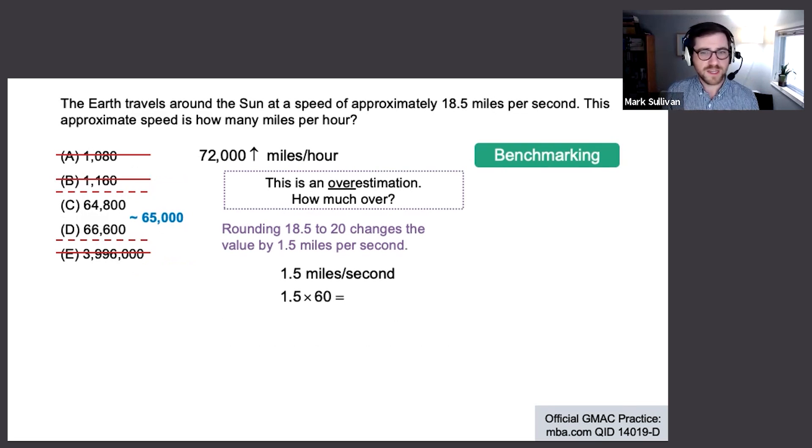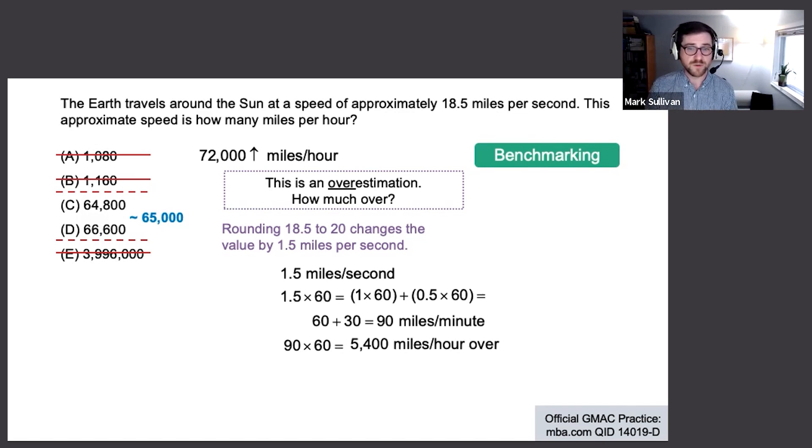1.5 miles per second - I could run through the same procedure here, turn that into miles a minute: 90 miles per minute. Again here, I would be lazy and split this computation up - we got 1 times 60 and then half a 60 to get to 90. Then multiply that by another 60 to get to miles per hour, so 5,400 miles per hour. That's how far over we were. And so we have our answer: 72,000 our estimate minus the adjustment factor to get to the precise answer, 66,600.